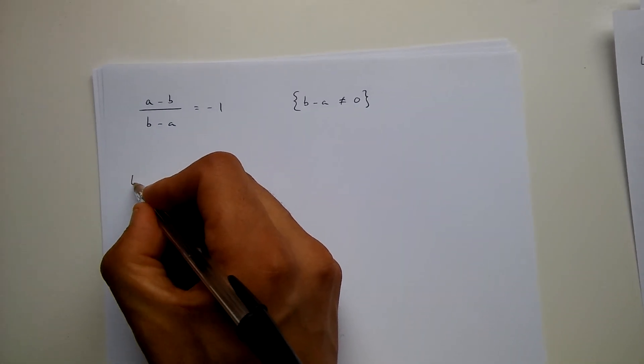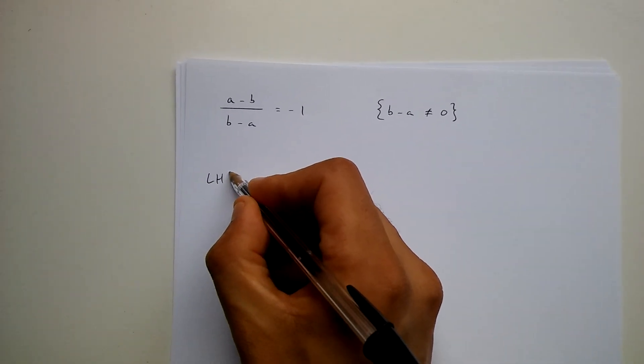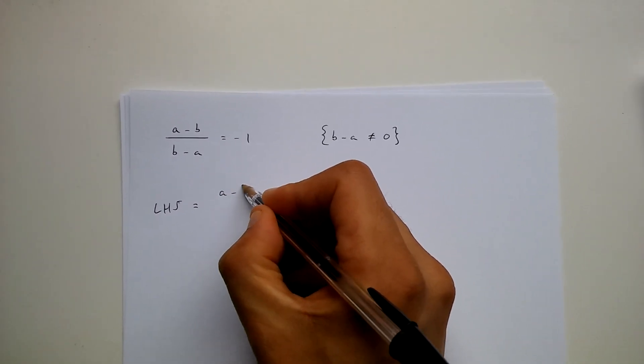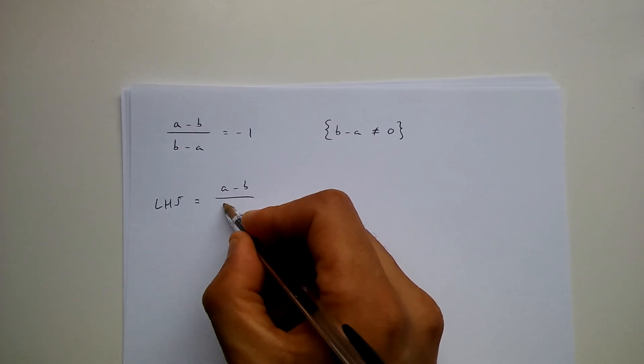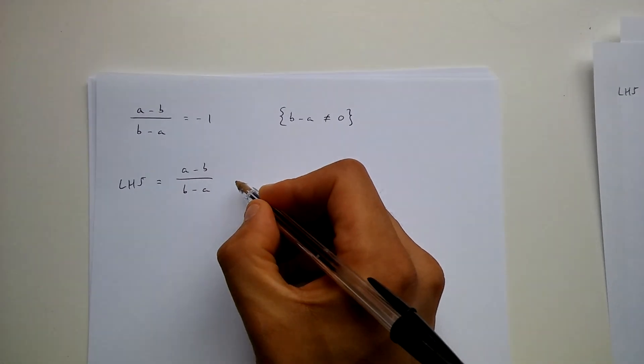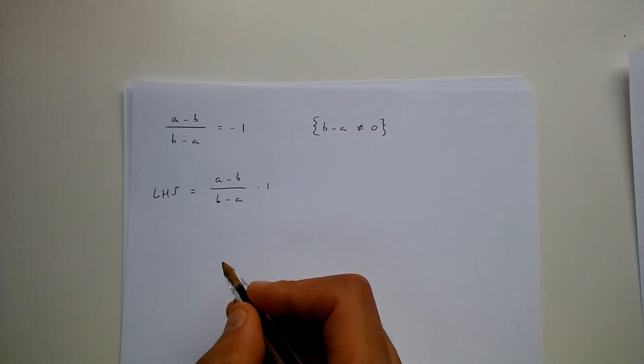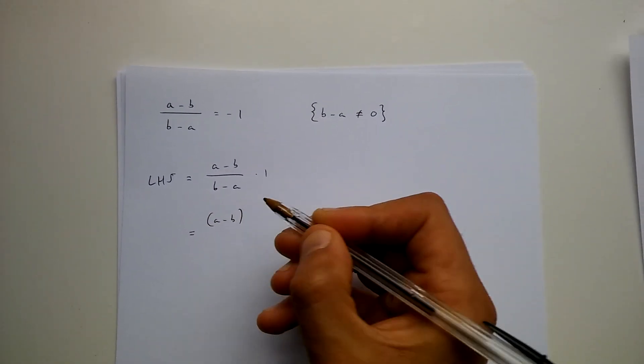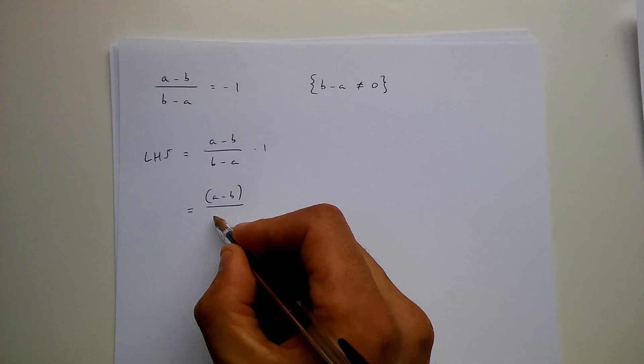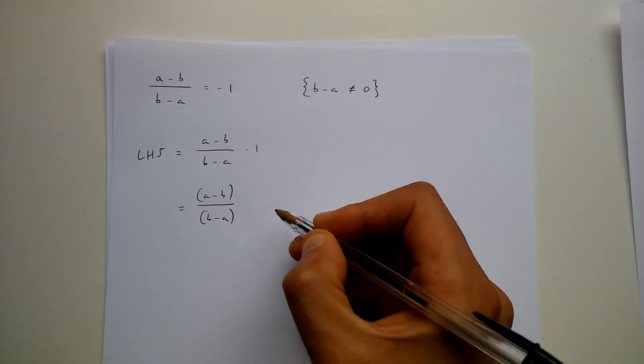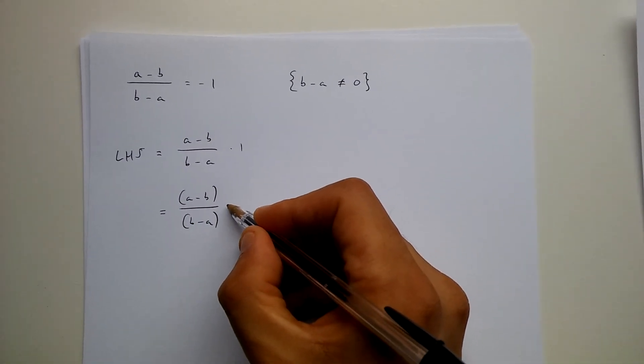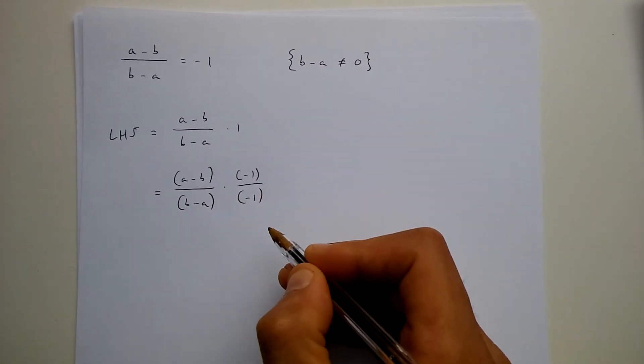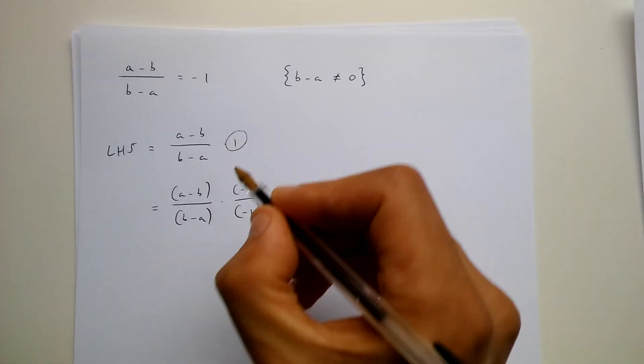First of all I'm going to write down left-hand side and this is equal to a minus b over b minus a times 1, and this is the same as a minus b in brackets over b minus a in brackets times minus 1 over minus 1 which is equal to 1.